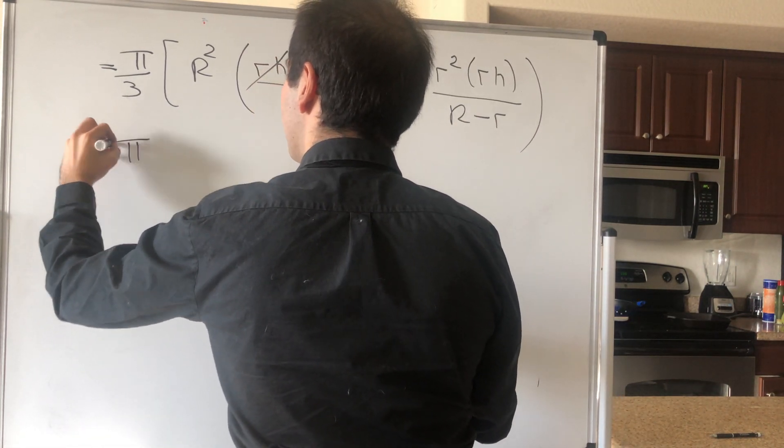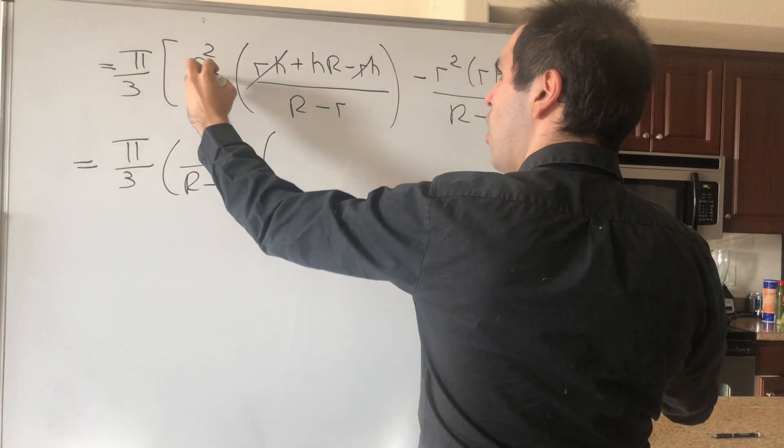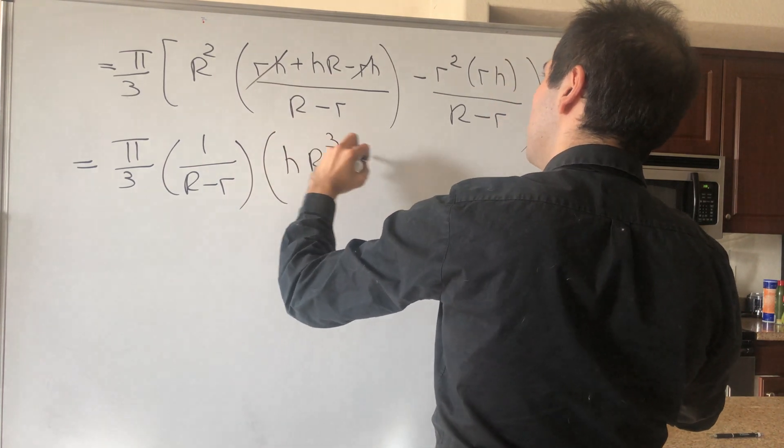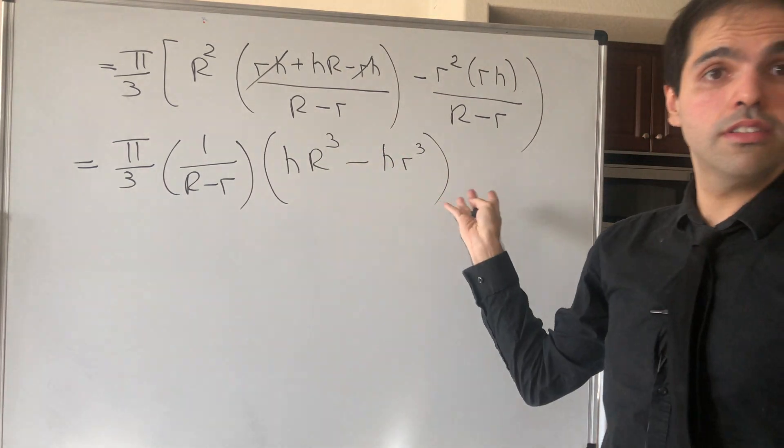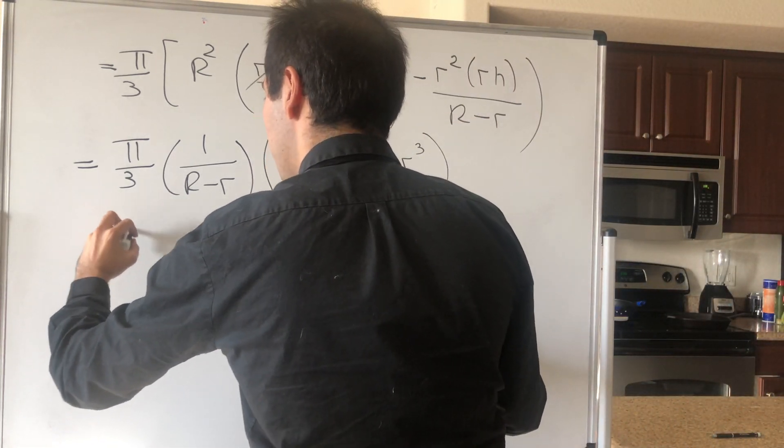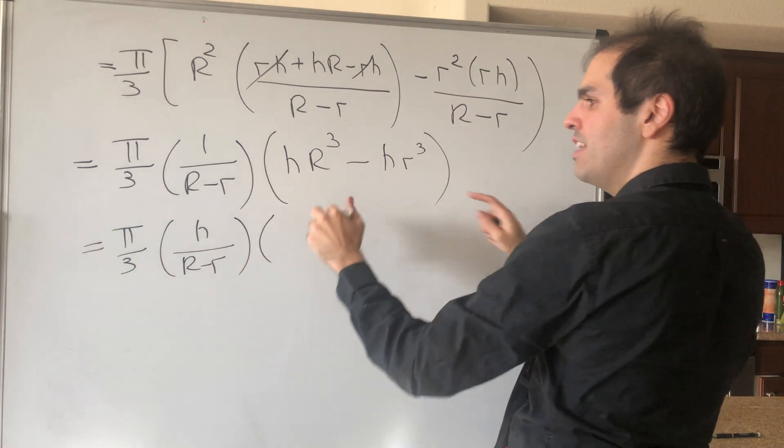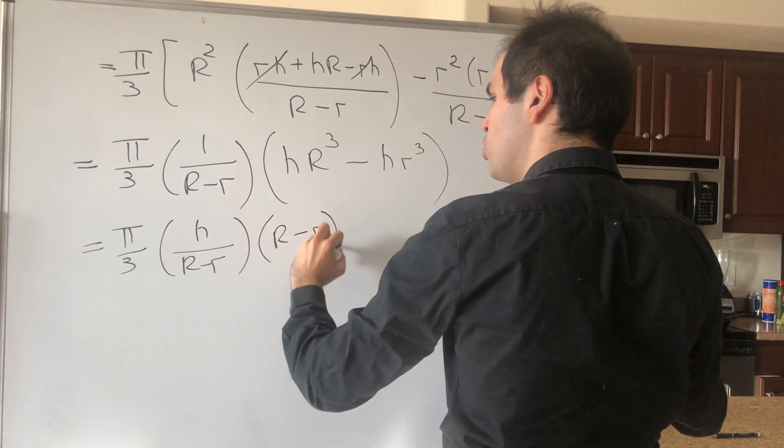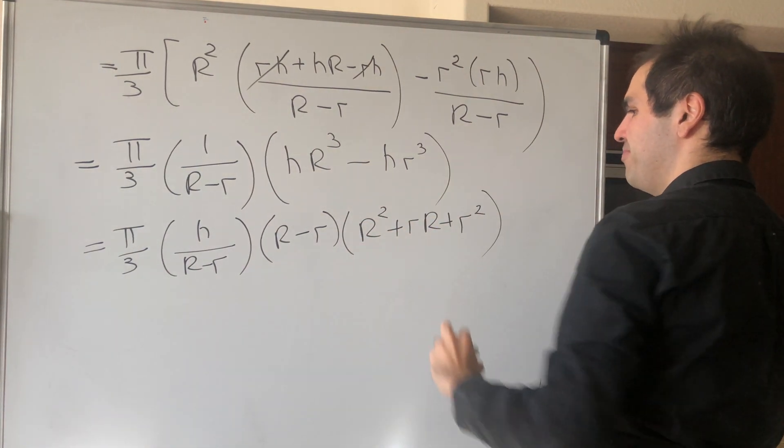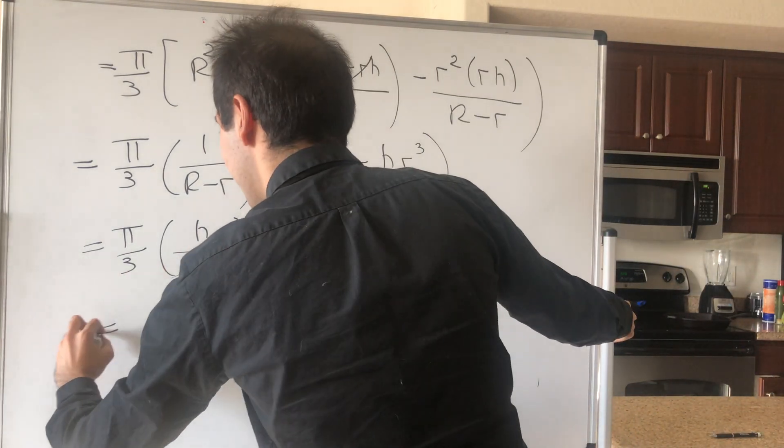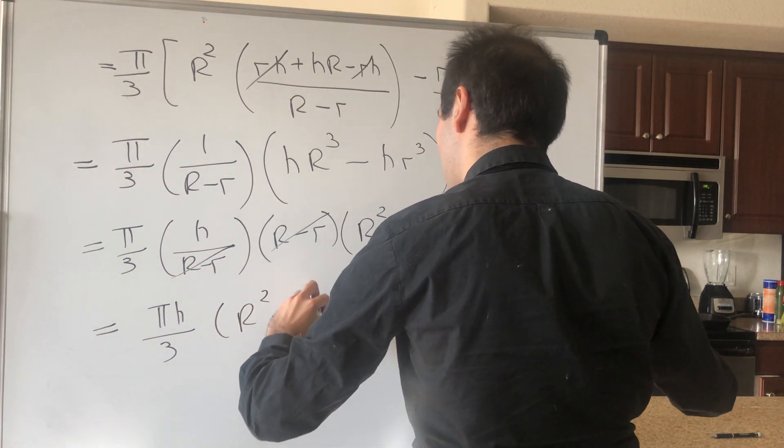So pi over 3, 1 over (R minus r). And now, let's expand this out, so we get R squared times hR, so h times R cubed, minus R squared times h, so h times R cubed. Which kind of becomes the same thing as before. So pi over 3, h over (R minus r), and then R cubed minus little r cubed, which I would like to remind you, we can factor out. So (R squared plus rR plus r squared). And then, this cancels out, and we get pi h over 3 times (R squared plus rR plus r squared).